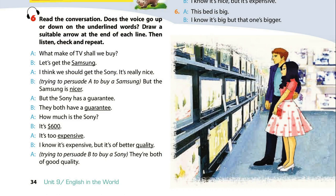Activity 6: Read the conversation. Does the voice go up or down on the underlined words? Draw a suitable arrow at the end of each line. Then listen, check and repeat. What make of TV shall we buy? Let's get the Samsung. I think we should get the Sony — it's really nice. But the Samsung is nicer. But the Sony has a guarantee. They both have a guarantee. How much is the Sony? It's $600. It's too expensive. I know it's expensive, but it's better quality. They're both of good quality?